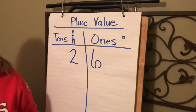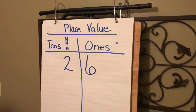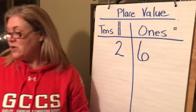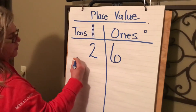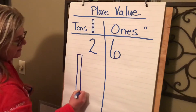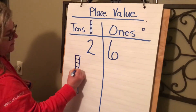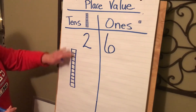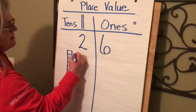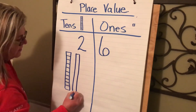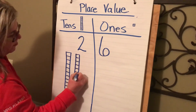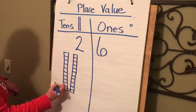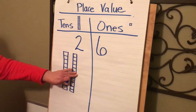Now you have some cubes and you have a place value mat that looks like this. If you used your blocks and put them together, you could put 10 of your blocks together. You have 10 all together but that's a 1 ten, and you put another 10 together. So I have 1, 2 tens — 10, 20.